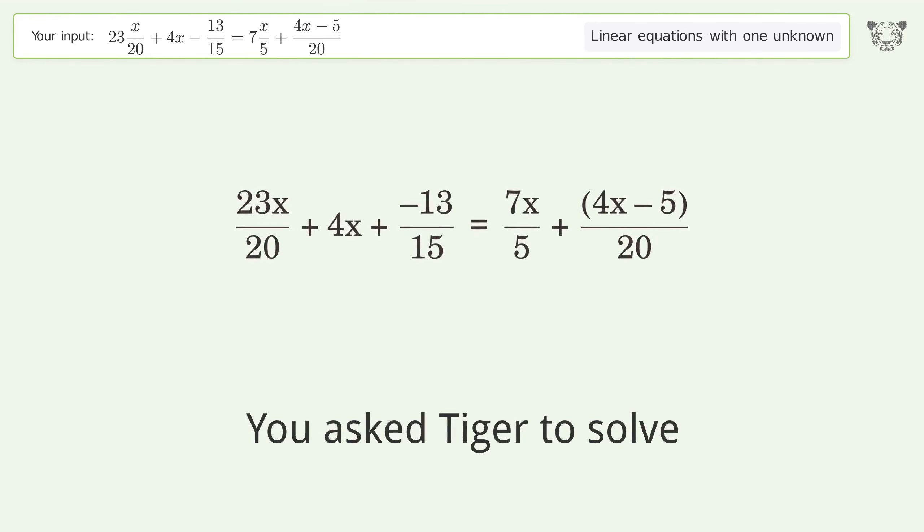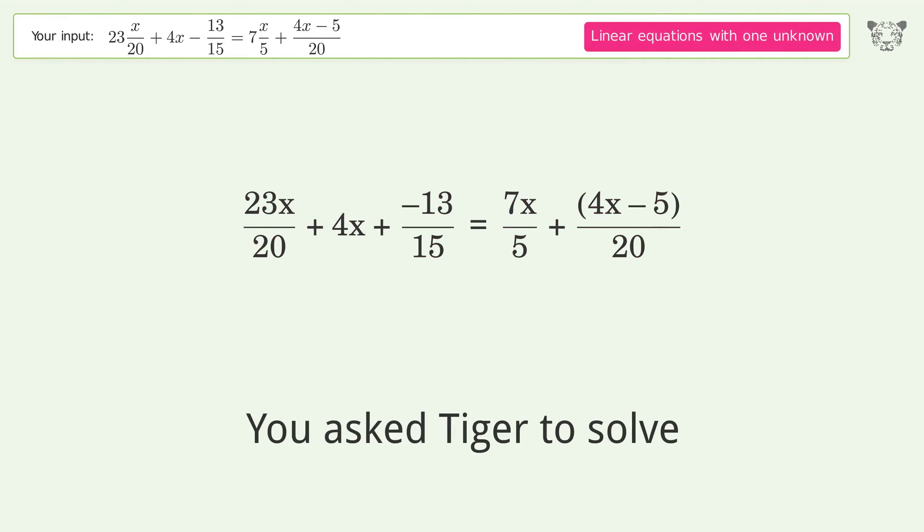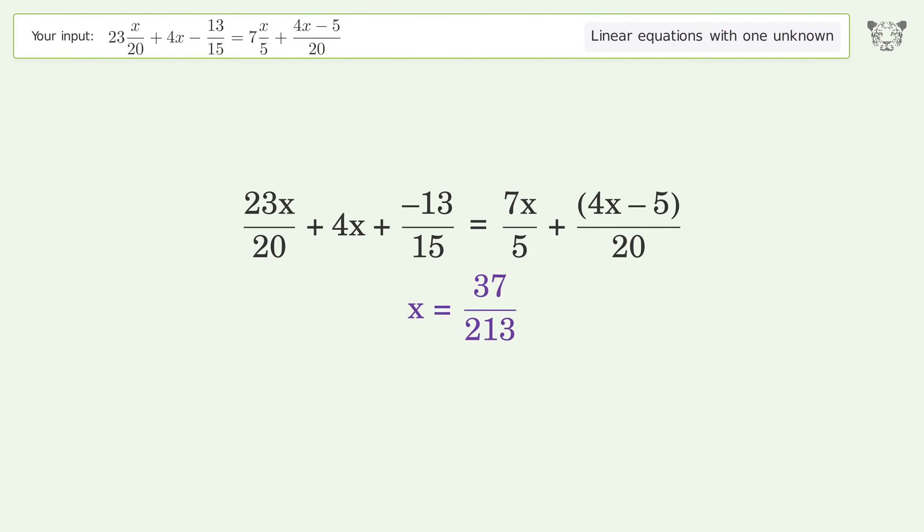You asked Tiger to solve this. It deals with linear equations with one unknown. The final result is x equals 37 over 213.